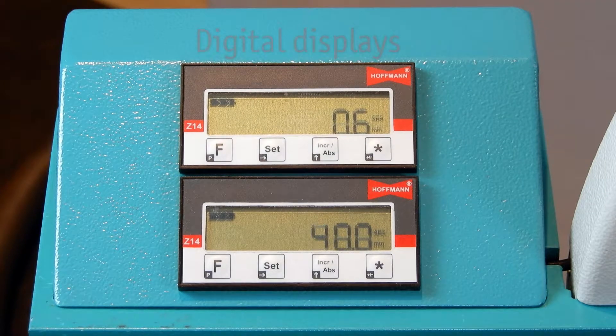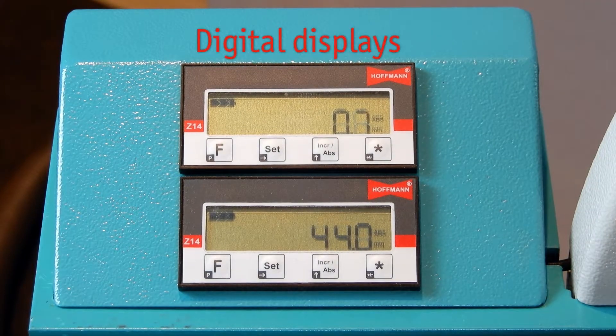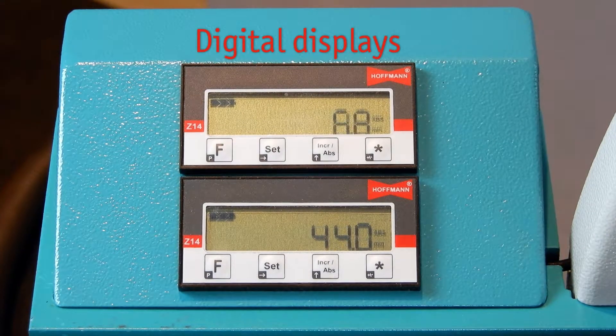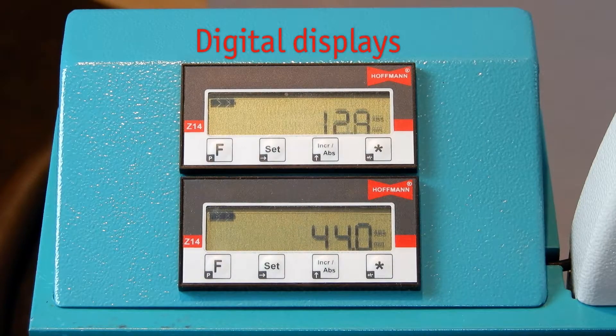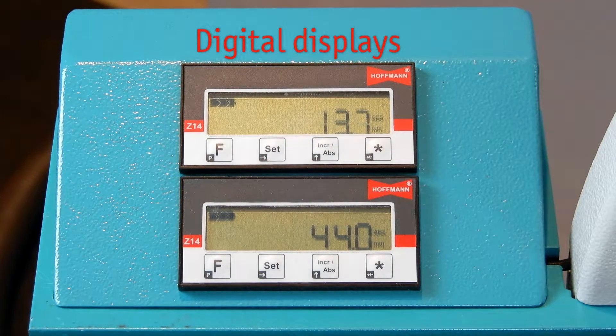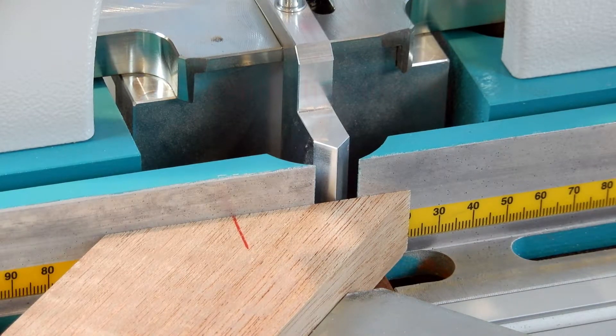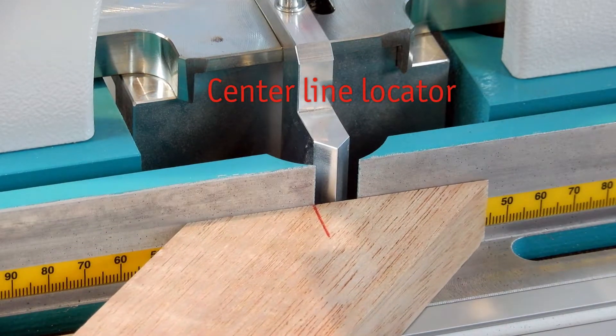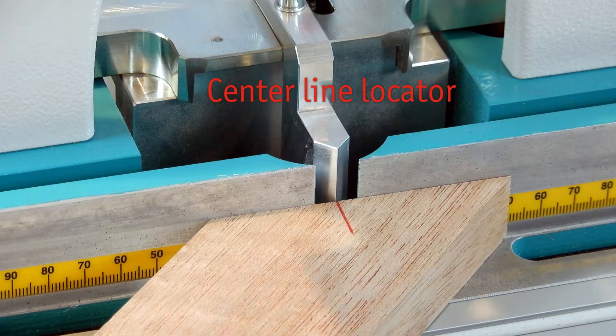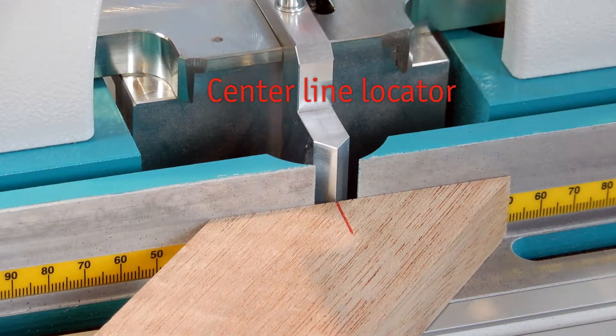The two digital displays show the position of the keyway in reference to the corner and the routing height with an accuracy of one-tenth of a millimeter. The center line locator shows exactly the center of the keyway and can be used to match a marked profile.